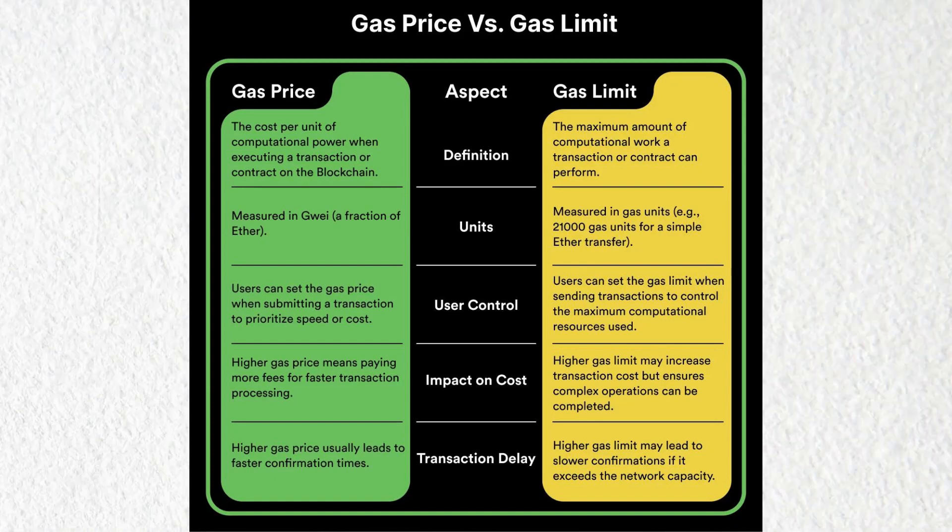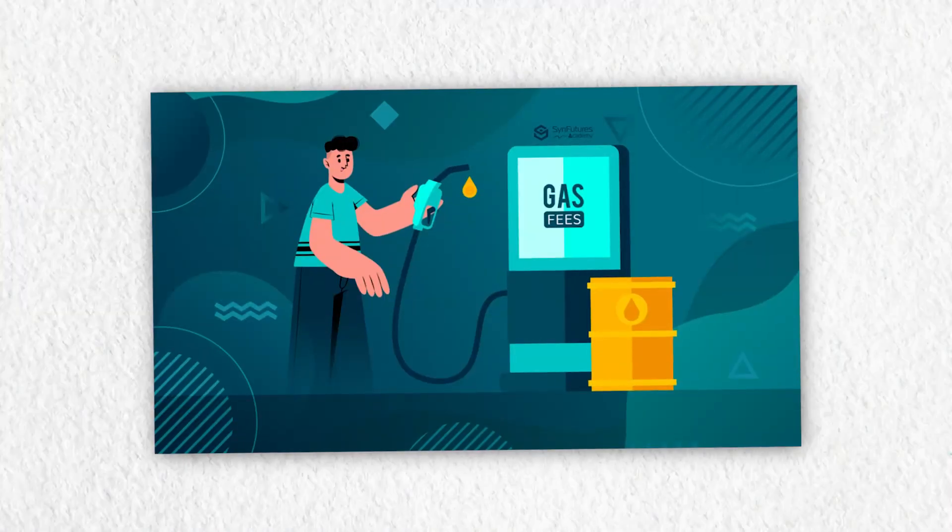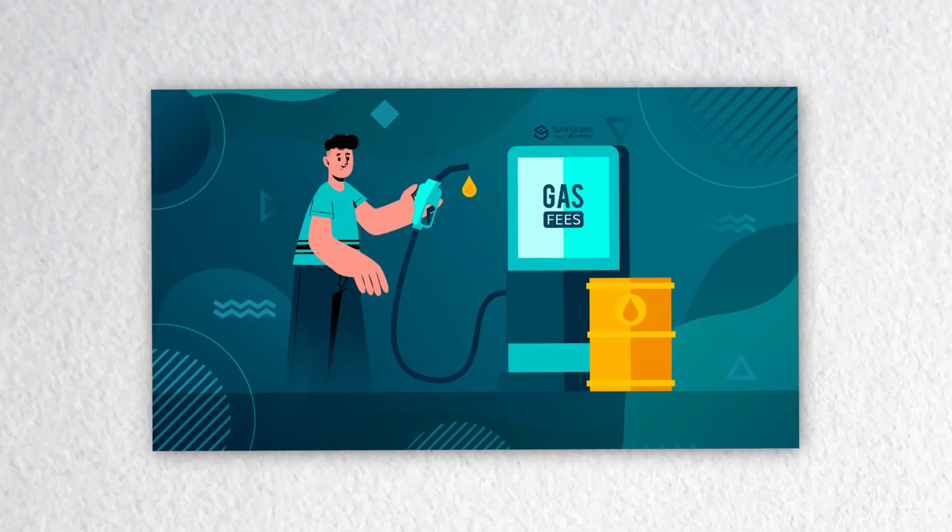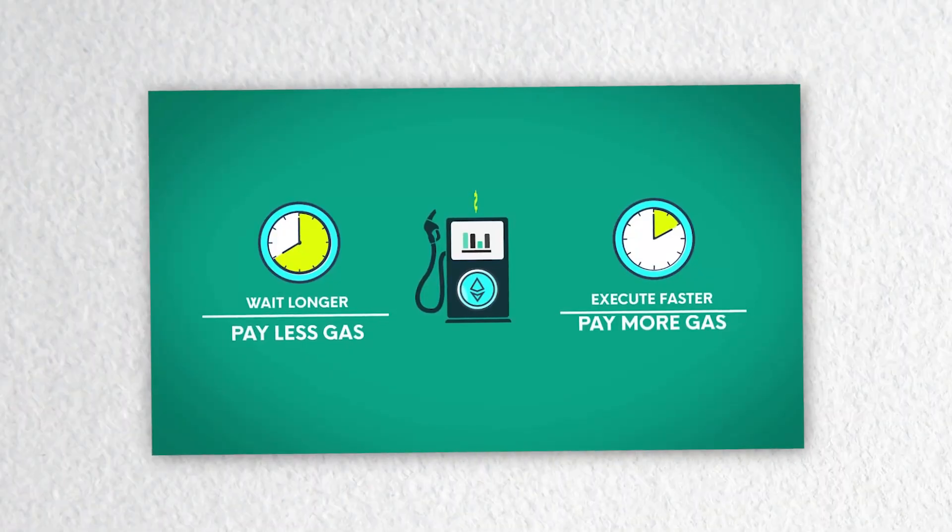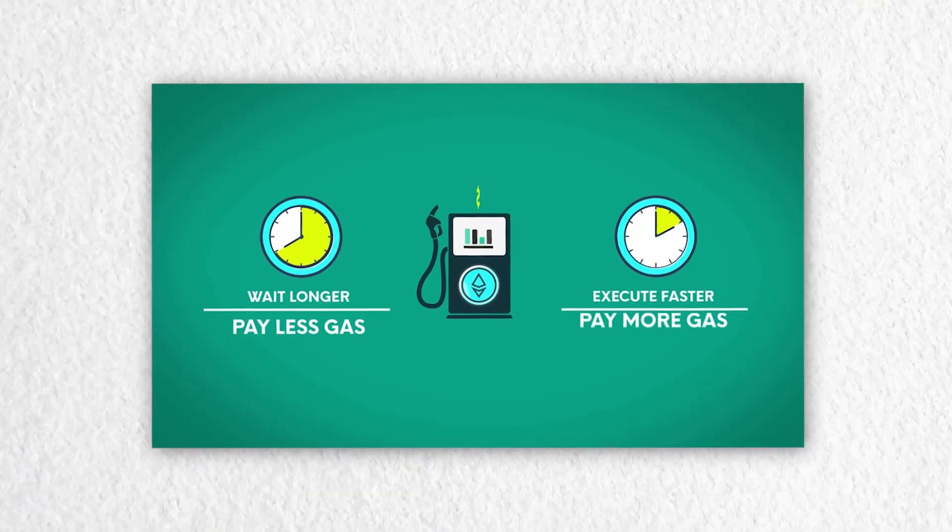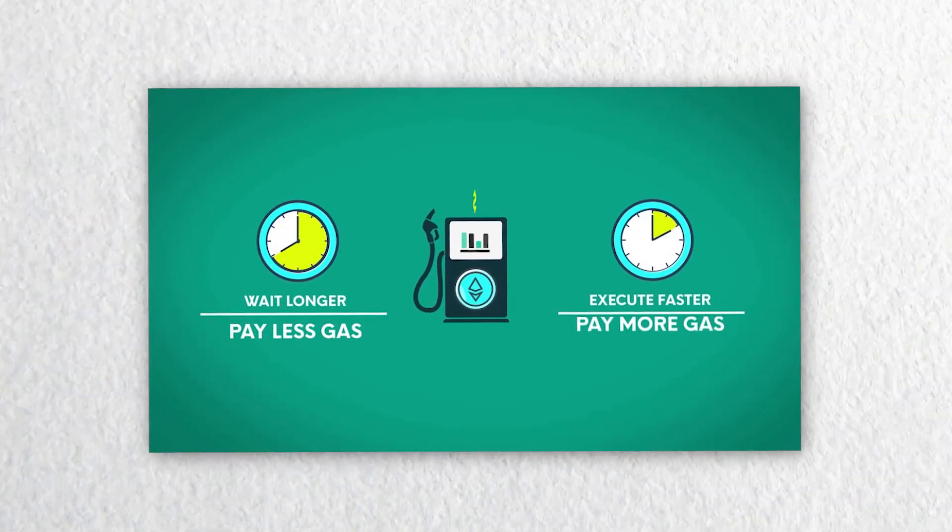To mitigate the impact of high gas fees, users can take several steps. One of the most effective ways is to choose the right time to make a transaction. Gas fees tend to be lower during off-peak hours when there is less demand for network resources. Additionally, users can adjust the gas limit and gas price to find a balance that meets their needs.